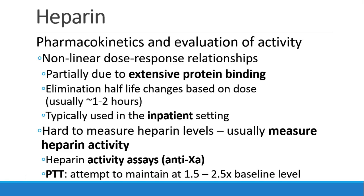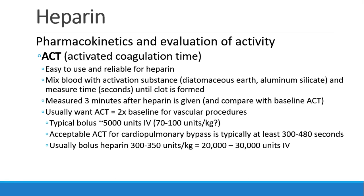Previously, we looked at the PTT, and we would try to maintain the PTT at 1.5 to 2.5 times the patient's baseline level. Most commonly in the operating room, we look at the ACT, the activated coagulation time, which works very well for heparin. The blood is mixed with some sort of activation substance, and then we measure how many seconds until a clot is formed. Usually we measure an ACT before heparin is given and again three minutes after to compare with the baseline. In most surgical procedures, we want the ACT to be twice the baseline for a vascular procedure. A bolus might be around 5,000 units IV, or maybe 70 to 100 units per kilogram. For cardiopulmonary bypass, we want to see a much higher ACT, somewhere in the 300 to 480 range.